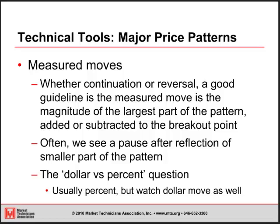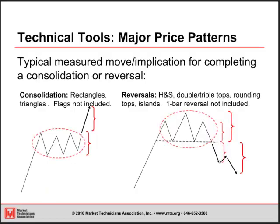We'll also look at the dollar versus percent question. For something like a head and shoulders or a major rectangle — say something trading in a range from $30 to $40 — is that a $10 move, so a breakout should take you from 40 to 50? Or is it a 30% move, so the breakout through 40 should actually take you to 52? Usually we're going to get that measured move completing in full percent terms, but it's good to also watch the dollar move as well. Normally, we're going to get a completion of that measured move in terms of percent.